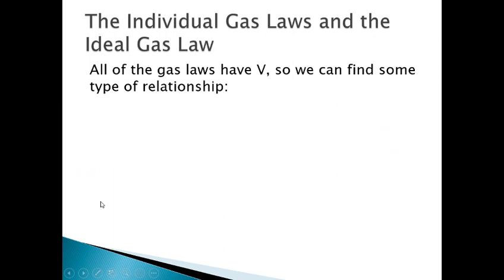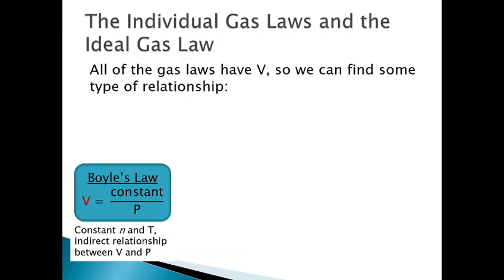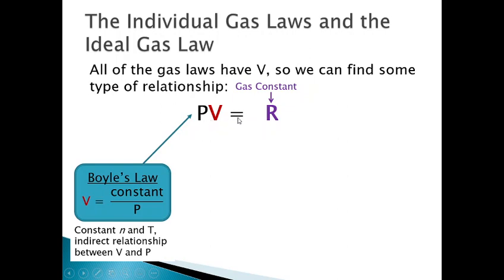Talking about these individual gas laws — one thing you might not have noticed is each one of these gas laws had to do with volume. Boyle's Law determined the inverse relationship between volume and pressure. Isolating the two variables, moving pressure underneath the fraction, we end up with a new equation: pressure times volume equals a constant. Now giving this constant its own variable — let's call it R — Boyle's Law gives us PV equals some constant R.